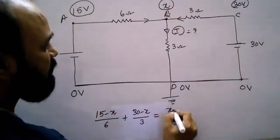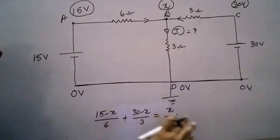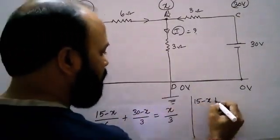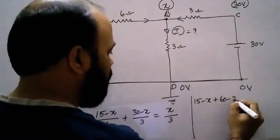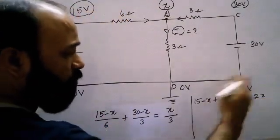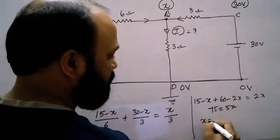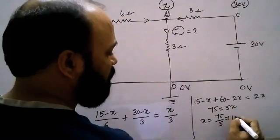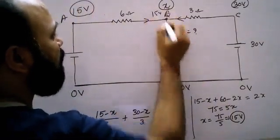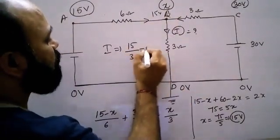Now I multiply both sides by 6. The 6 cancels on the first term giving 15 minus X. The factor of 2 cancels giving 60 minus 2X, which equals 2X. Rearranging: 75 equals 5X, so X equals 75 by 5, which gives X equals 15 volts. The current they ask is 15 minus 0 by 3, which is 15 by 3, that equals 5 amperes.